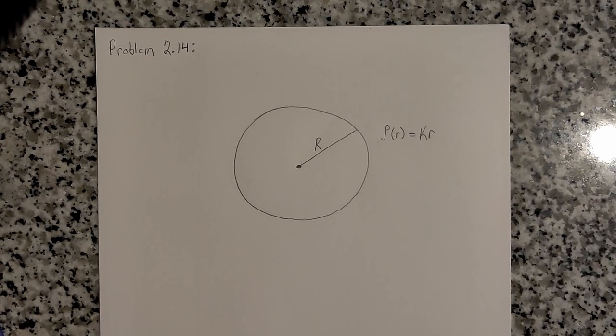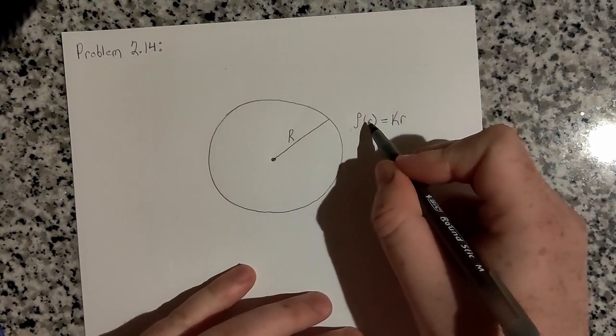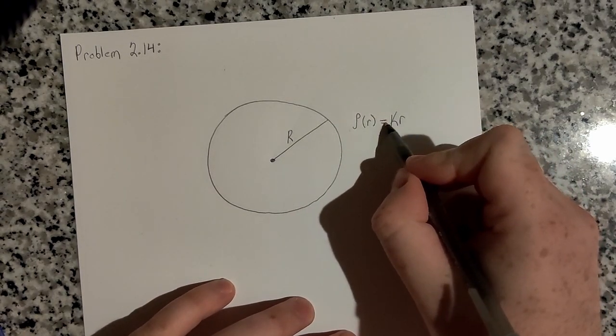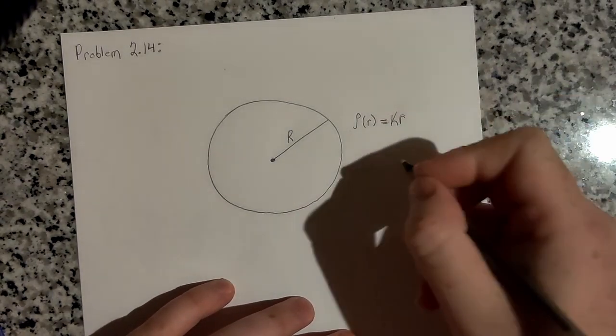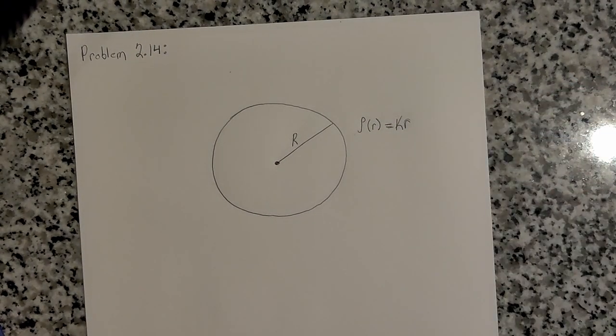This problem states to find the electric field inside a sphere that carries a charge density proportional to the distance from the origin, which I've written out here. So the charge density of this sphere is proportional to the radius r, and I've just written the proportionality constant k. It gives us a hint that this charge density is not uniform, and therefore you must integrate to get the enclosed charge.